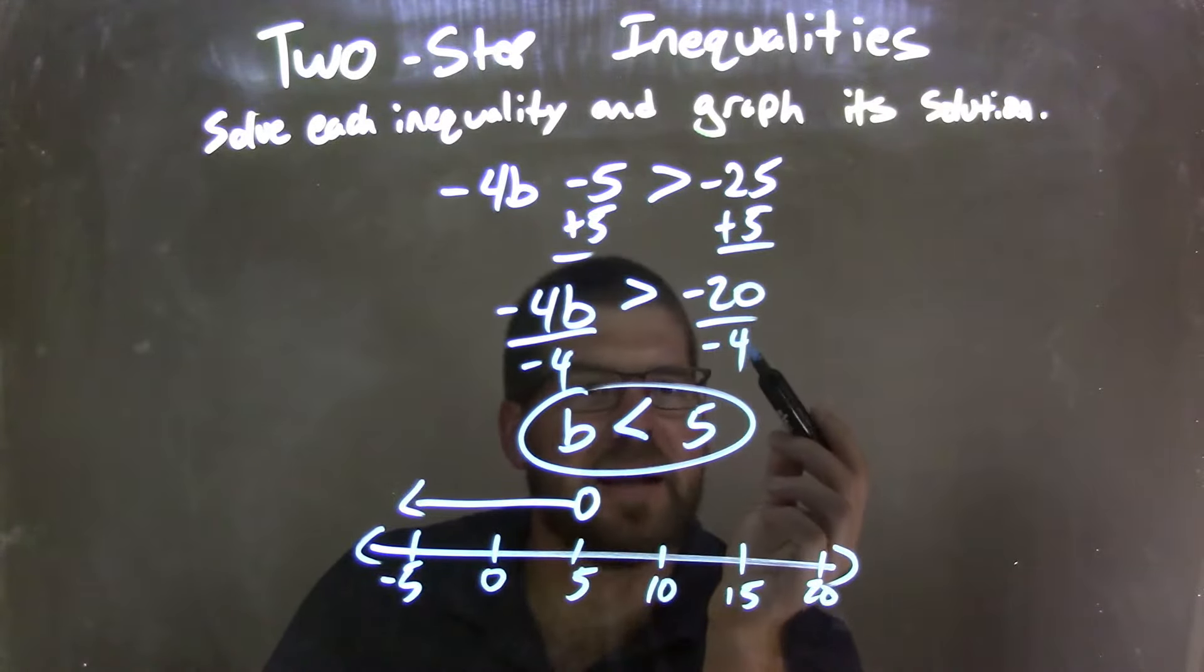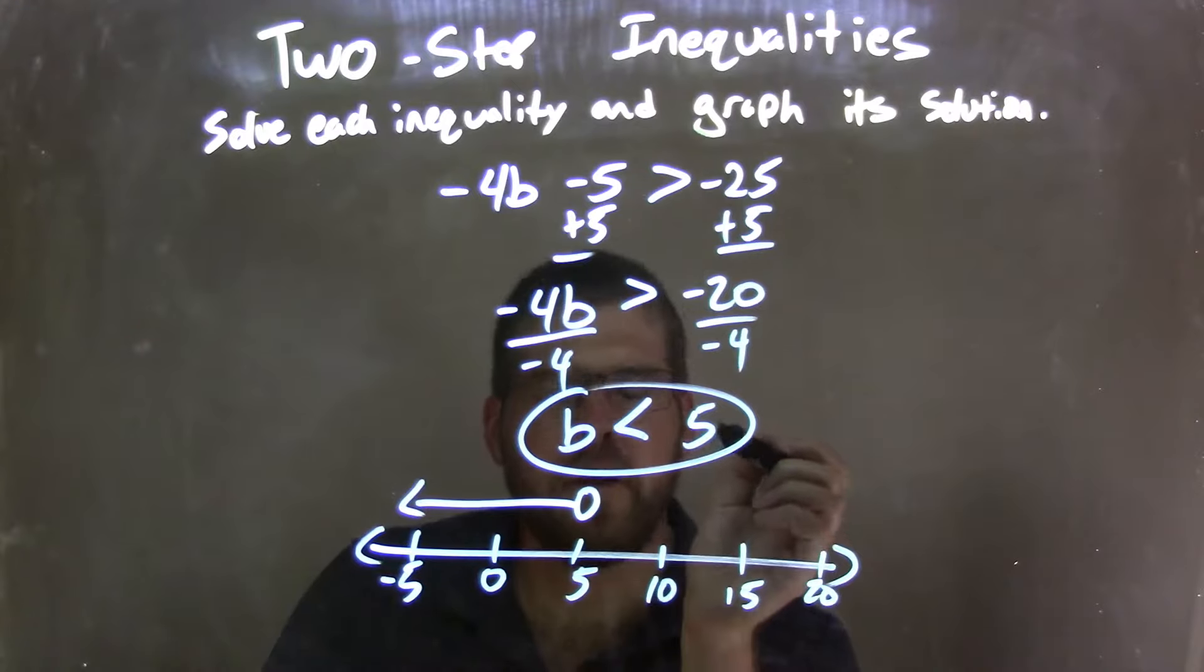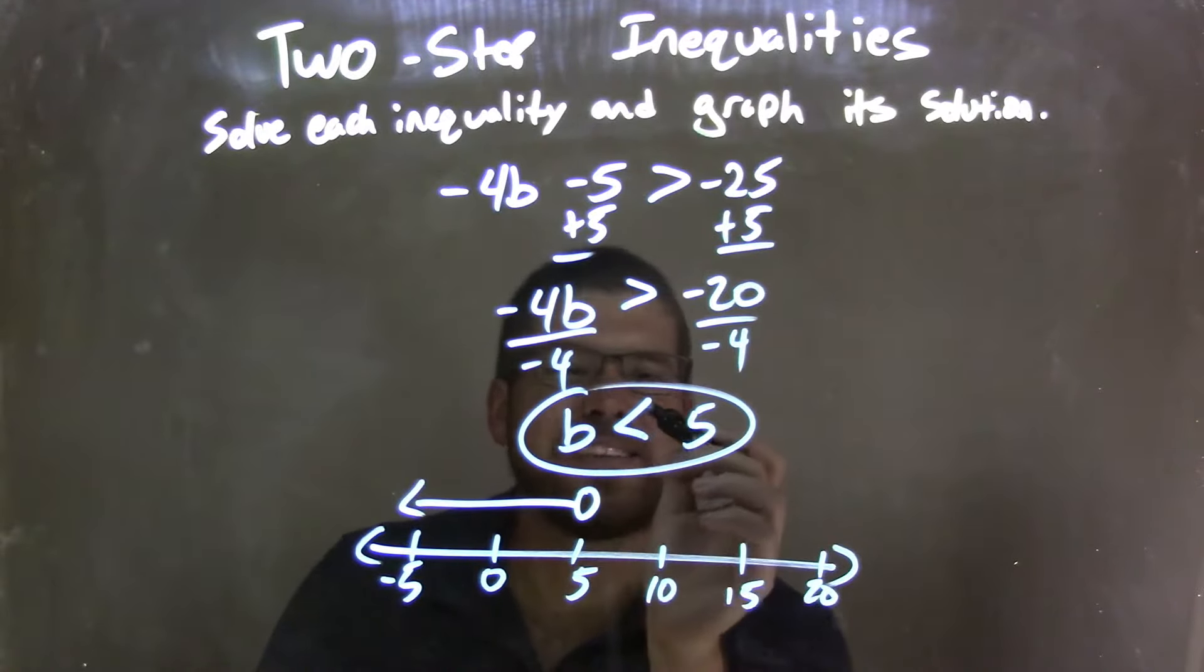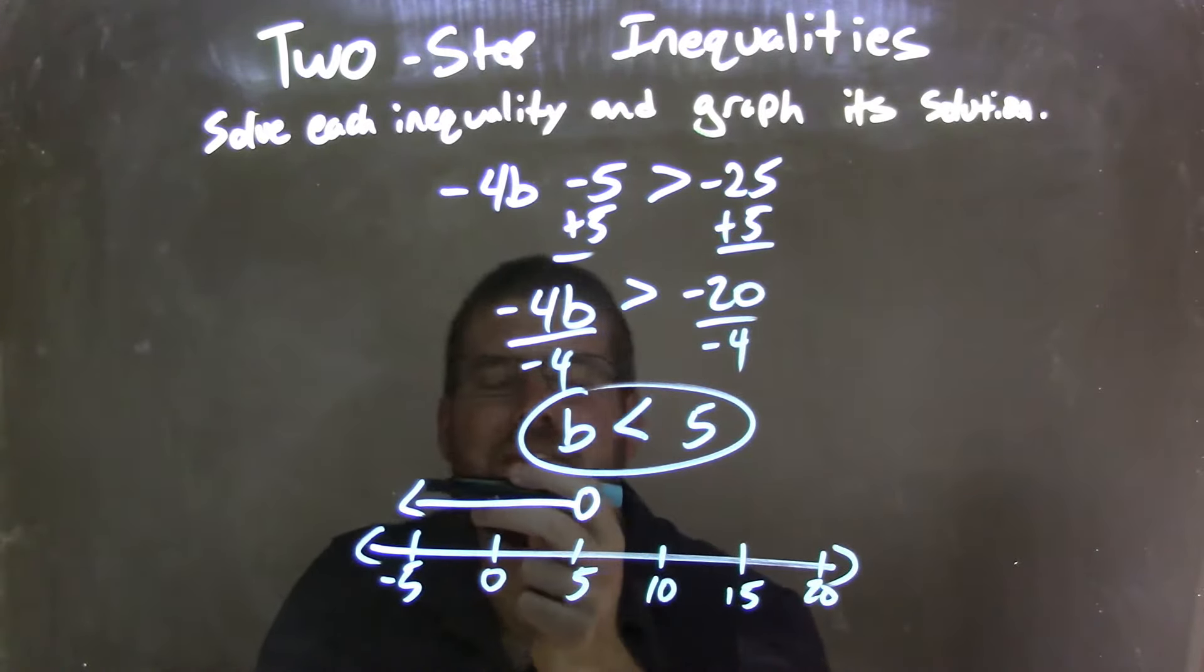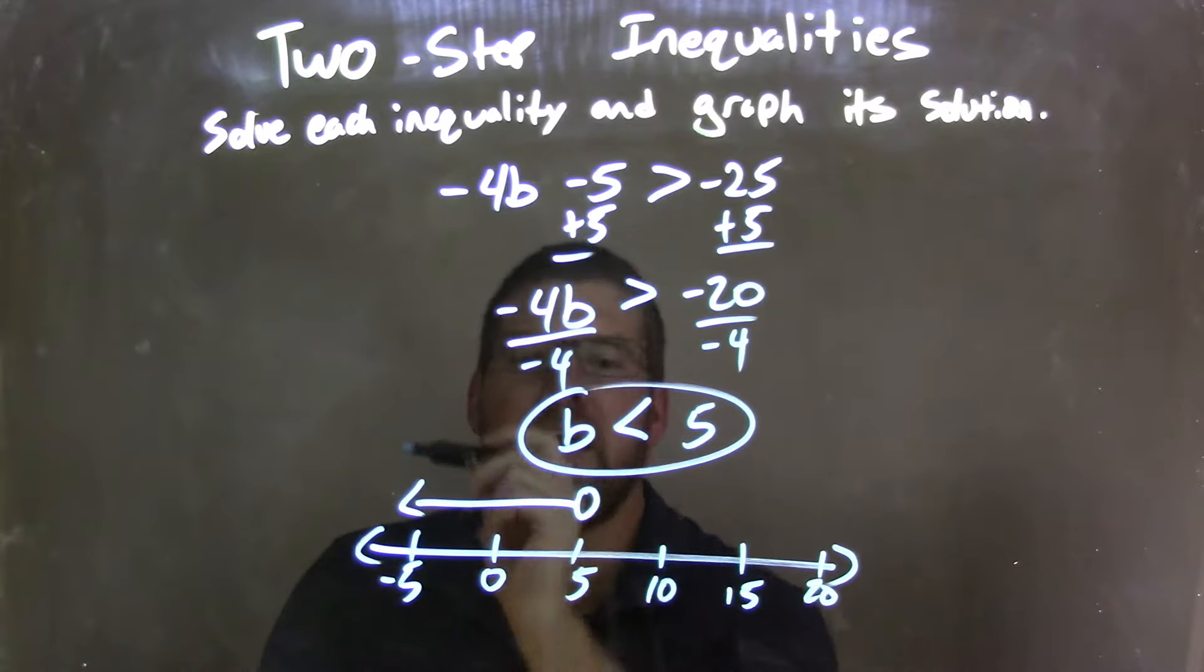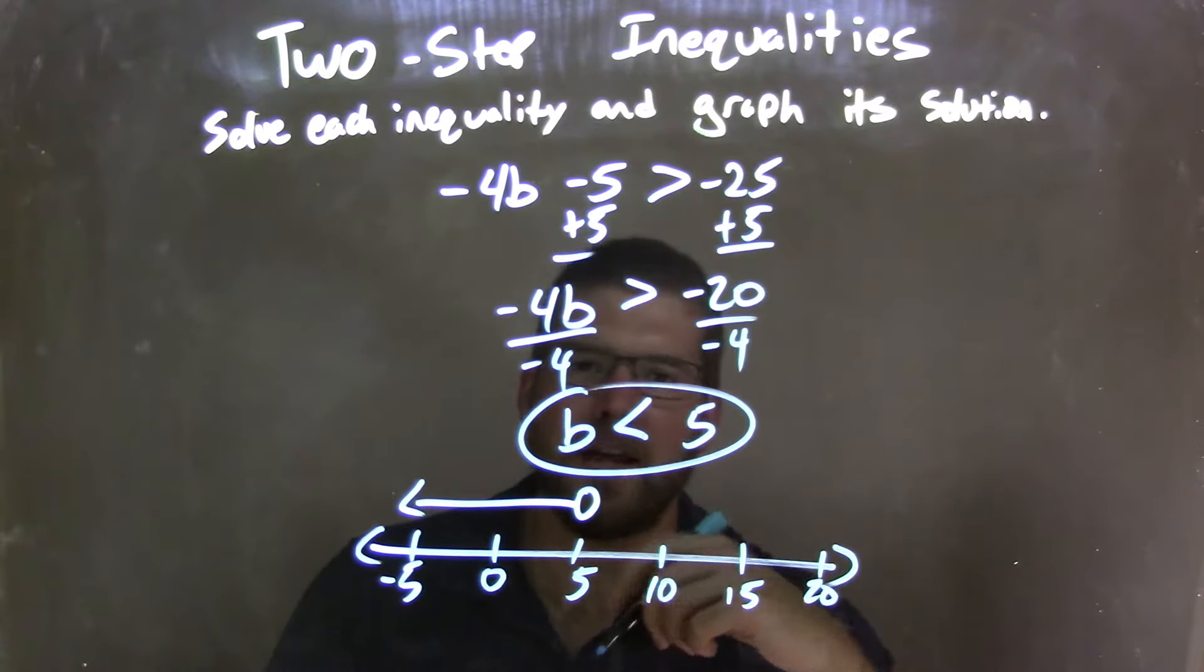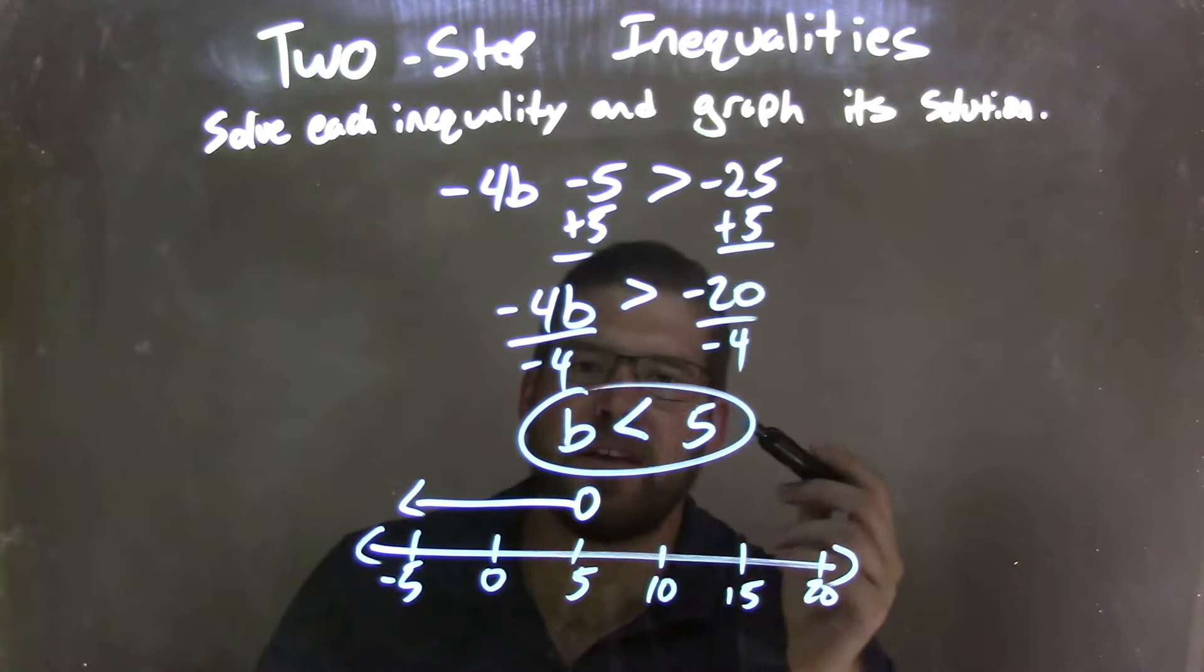And then negative 20 divided by negative 4 is positive 5. So now we have our final answer, b is less than 5. I graphed it, and since it's not equal to, I had an open circle at 5, and then the arrow to the left shows that b is less than 5. And so now my graph matches my final answer, that is b is less than 5.